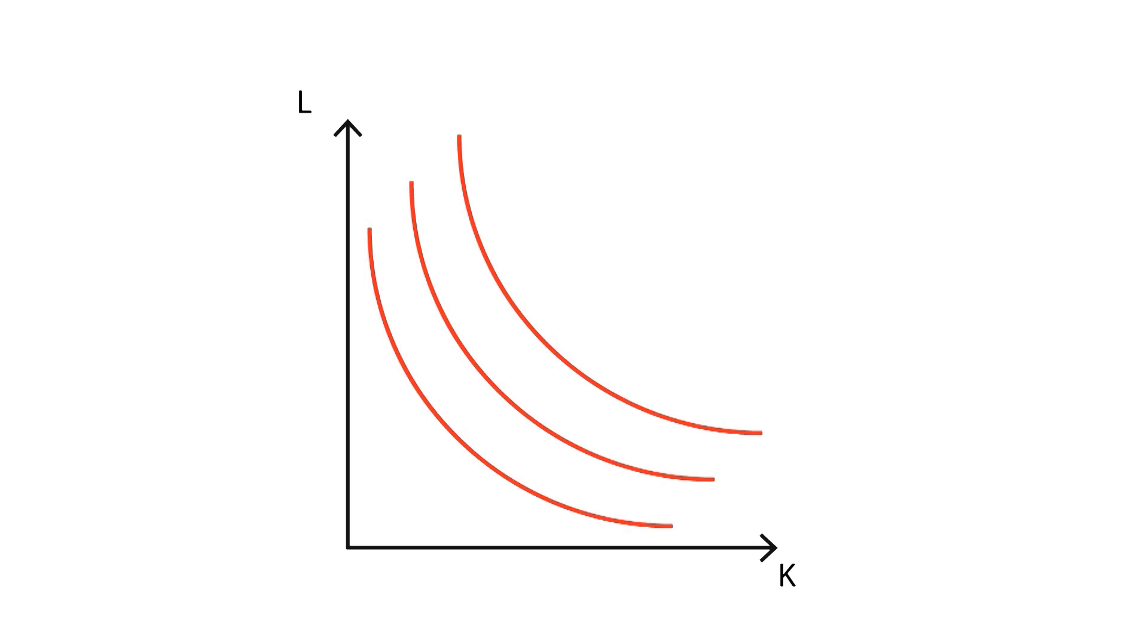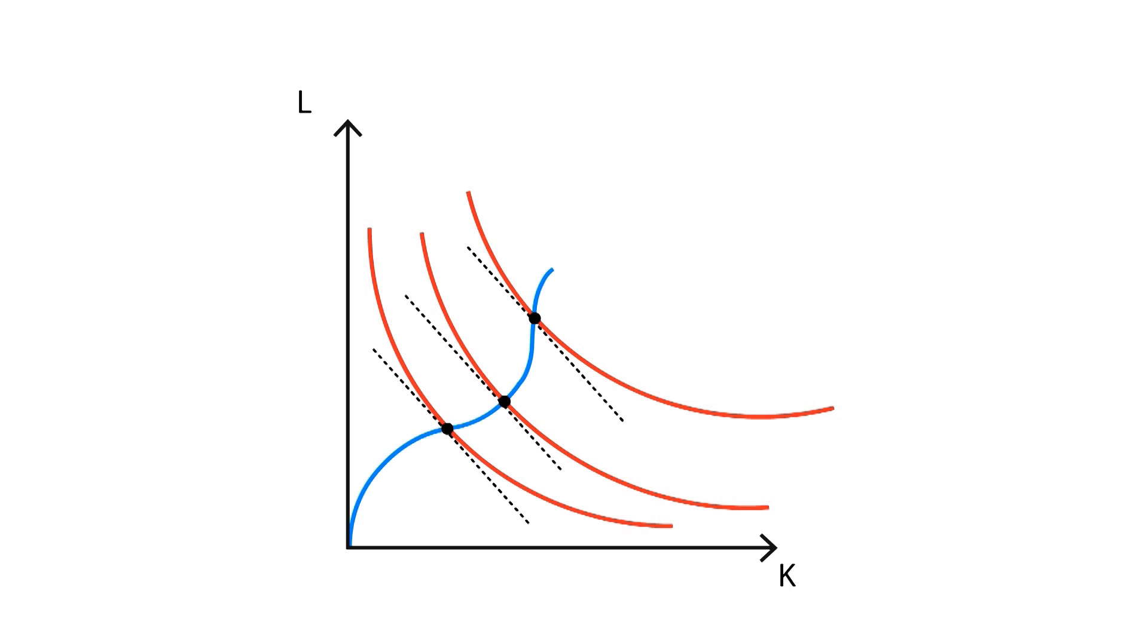In the real world, the production functions do not usually follow symmetrical paths, and as a result, their isoquant's curve might look more similar to these. As we can see, the isocline line path will be altered.